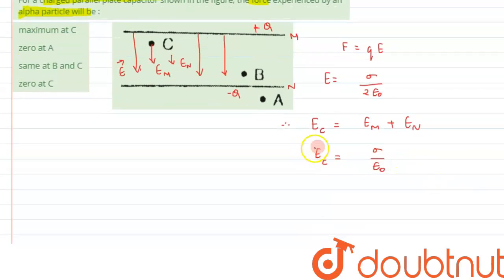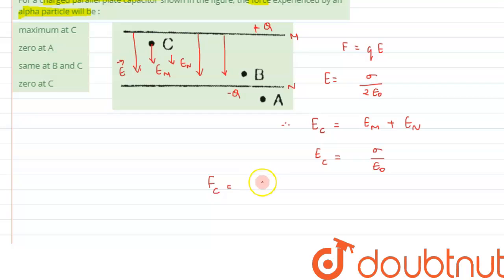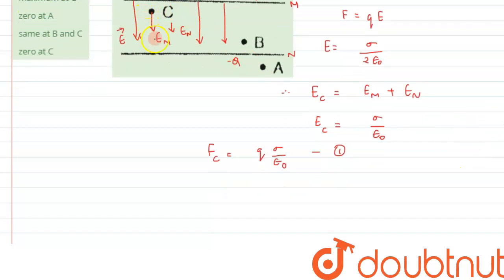The net electric field at C equals σ/ε₀. So the force acting on the alpha particle at C will be F = q × σ/ε₀. We can write the force at C as qσ/ε₀ — let this be equation number one.